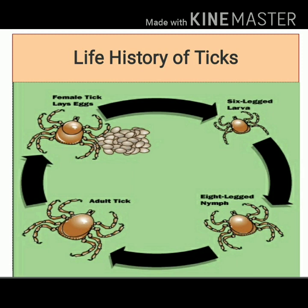Life history of ticks includes four stages: egg, larva, nymph, and adult. Hard ticks lay eggs numbering hundreds to thousands at one sitting, whereas soft ticks lay eggs in batches of 20 to 100 over a long period. In one to three days, these eggs hatch into the next stage, known as larva. The larva of the tick has three pairs of legs, requires a blood meal, and the duration of the larval stage may vary from 3 to 13 days.